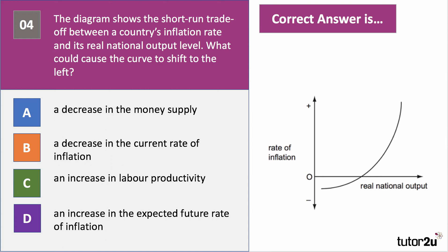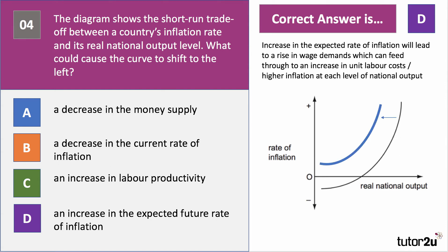Here we're looking at a possible trade-off — as real output increases, the potential rate of inflation increases. What would cause the curve to shift to the left — in other words, a worsening of that trade-off between GDP growth and inflation? The answer to question four is D — an increase in the expected future rate of inflation. A decrease in money supply would cause inflation pressures to fall. A decrease in the current rate of inflation would have no impact, and an increase in productivity would actually improve the trade-off, because productivity growth means businesses can produce more at lower prices and unit costs go down. An increase in the expected rate of inflation leads to higher wage demands in the labour market, which feeds through to higher unit labour costs and higher inflation at each level of national output.